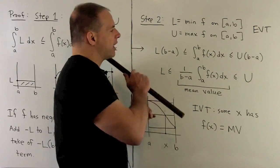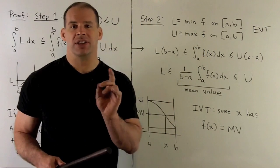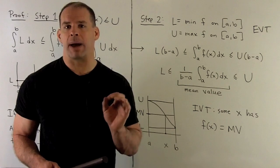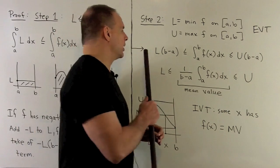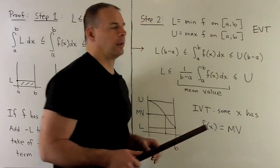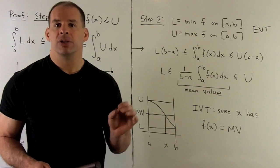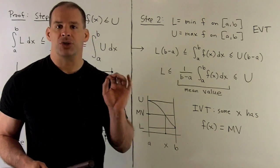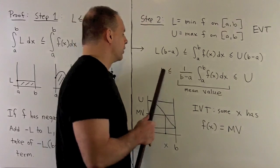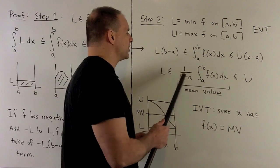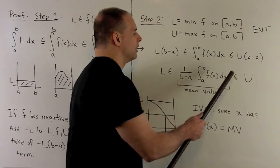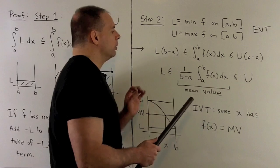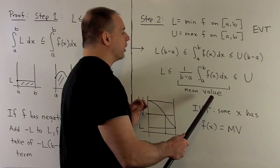Then we note, we calculate those constants, you take the definite integral, you're just multiplying by B minus A. So, we get this inequality here. Now, B minus A is always a positive number, so we can divide through, doesn't disturb the inequalities. So, L less than or equal to 1 over B minus A, our definite integral less than or equal to U. So, note, this term in the middle is what we're calling the mean value.